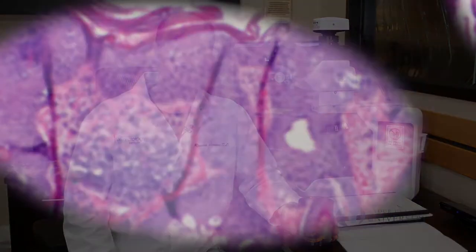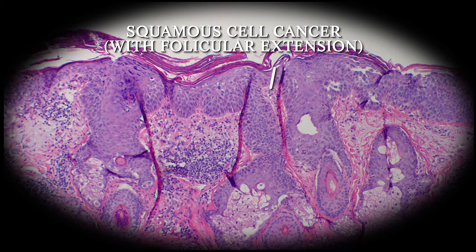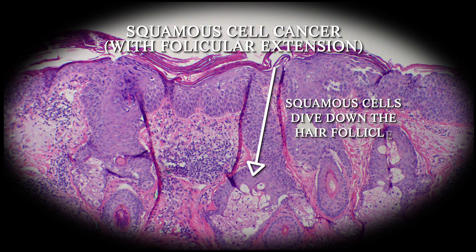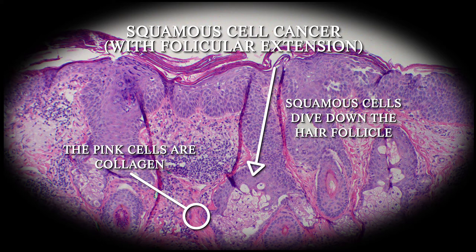In this example you're going to see a pathology slide of a squamous cell cancer with follicular extension. You can see the squamous cells that are atypical or cancerous diving down the hair follicle, and on either side you can see strong collagen — the stuff that holds our skin together. If we treated this with just a scrape and burn procedure like an ED&C, you can see how that probably would not be the best treatment because it doesn't address the depth.